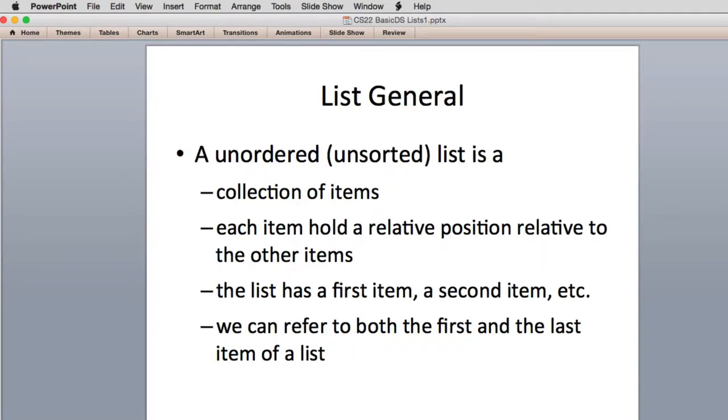In general, we're going to be implementing an unordered, basically unsorted list. The qualities of an unordered list: it's a collection of items. And like all the linear structures, each item holds a relative position relative to the other items. The list has a first item, a second item, and so on. And you can refer to the first and the last item of the list.